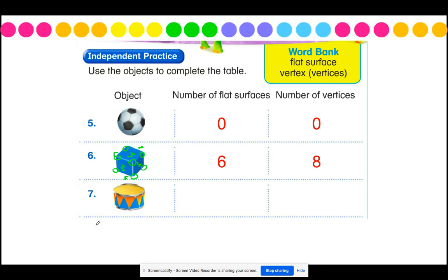Now let's talk about this drum. This drum looks like what solid shape? Shout out your answer. I hope that you said it looks like a cylinder. Let's think about a cylinder and the number of flat surfaces. I see one flat surface at the top, but I also know that a cylinder has the same thing at the bottom even though I can't see it. So there is a total of two flat surfaces on this drum. For number of vertices, it doesn't look like this drum comes to any corners or points, so there are zero vertices.